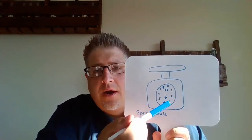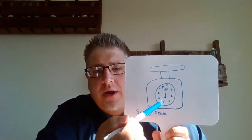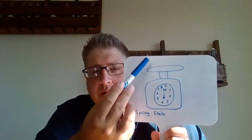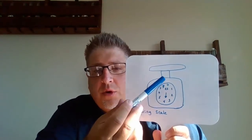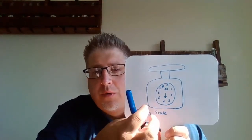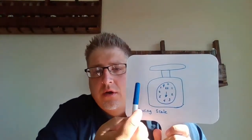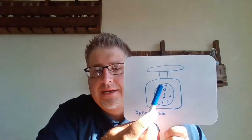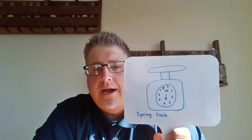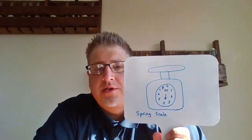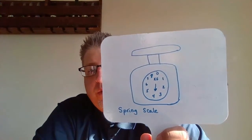It has an arrow here that's going to point — this one just happens to be pointing at 4, so I must have a reading of 4. When you pull the weight off, the arrow goes back to 0. You put an item on there, and that is what the spring scale is going to measure.